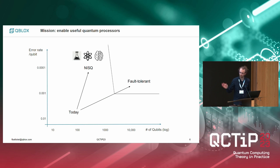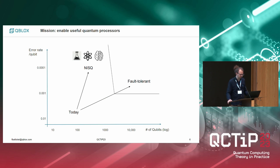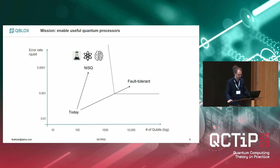We want to enable useful quantum computing and we look at both directions of NISQ and fault-tolerant quantum computing. NISQ means that maybe we can get away with fewer qubits than quantum error correction requires, but then they should be pretty good. And if that cannot be reached, at some point you just need to scale up the number of qubits to reach the fault-tolerant regime and do quantum error correction.